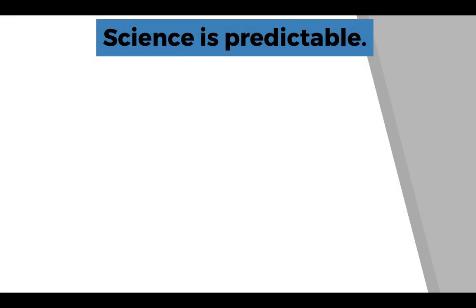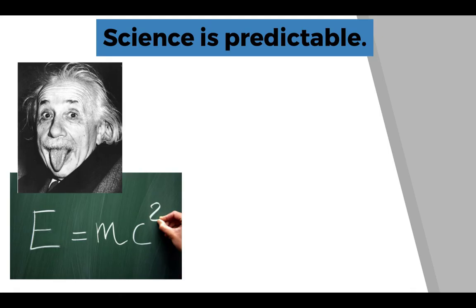We also know that science is predictable. That means that we can learn from what we have done in the past and use it to make predictions about future possible outcomes. We use things like formulas that other scientists have come up with. So that's Einstein. That's E equals MC squared. So energy equals mass times the speed of light squared. We could use that to make predictions about an object's mass or the energy of the object's mass if it was moving at the speed of light.